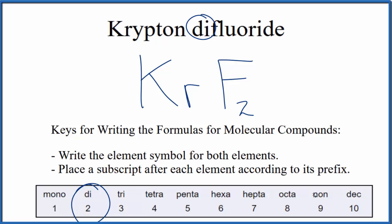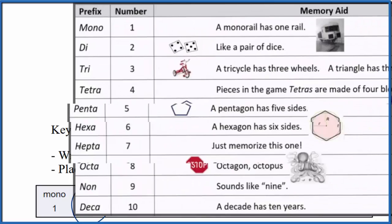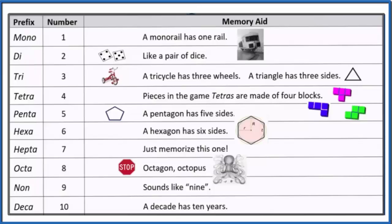If you need help memorizing these prefixes, this table here might help you out. This is Dr. B with the formula for krypton difluoride, KrF2. Thanks for watching.